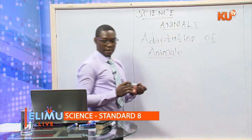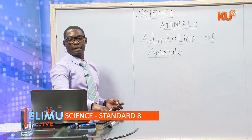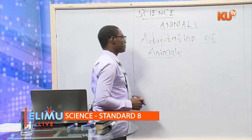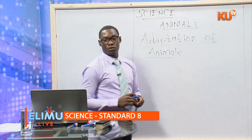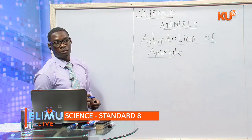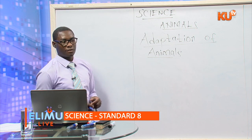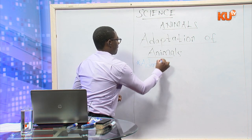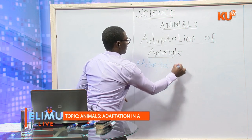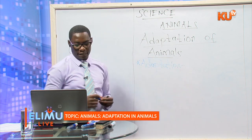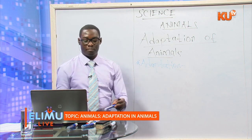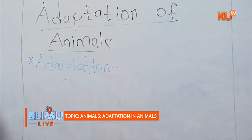We are going to look at adaptations of animals — that is our class 8 content. Before we talk about adaptations of animals, we need to understand what adaptation means. An adaptation refers to adjustments that happen in an animal — these are adjustments that enable an animal to survive in a particular environment.